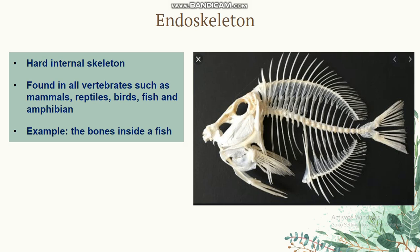So, what is endoskeleton? Endoskeleton, which means a hard internal skeleton. It is found in all vertebrates, such as mammals, reptiles, birds, fish, and amphibians. For example, the bone inside a fish.